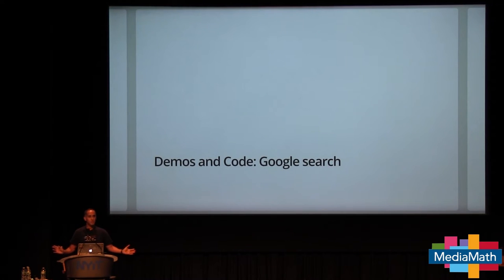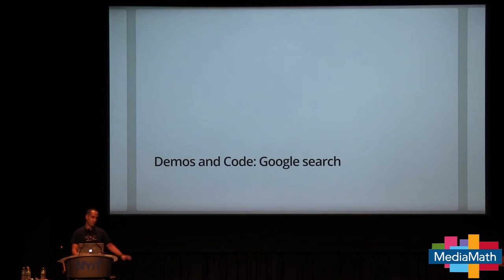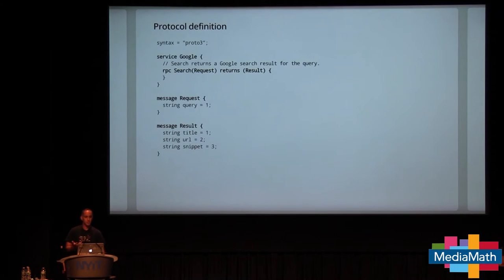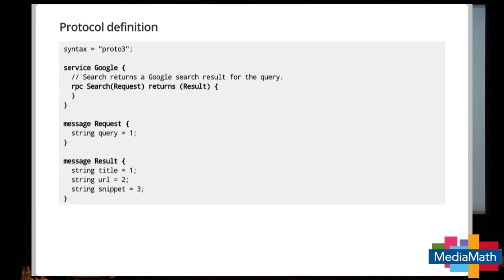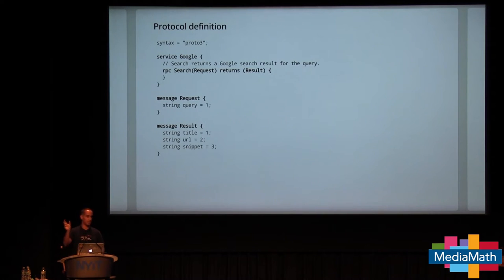The rest of the talk is code and demos. My example is a simplified version of Google Search. Here's a protocol definition — a Proto3 file. We define a service called Google with one RPC, search, that takes a request and returns a result. The request has one field: query, a string. The result has three fields: title, URL, and snippet, also strings. Proto is more general — you can have map fields, repeated fields. The numbers after fields are tag identifiers used for the protocol encoding.